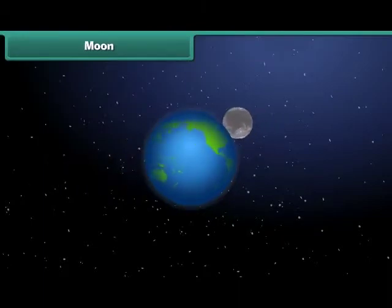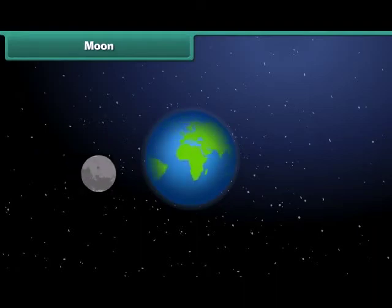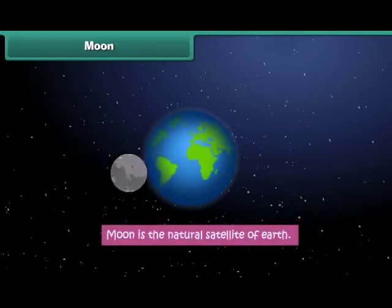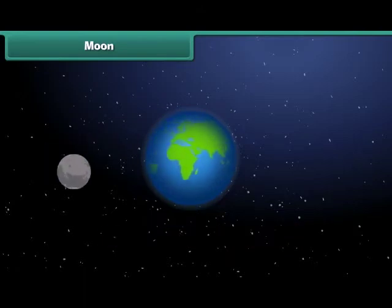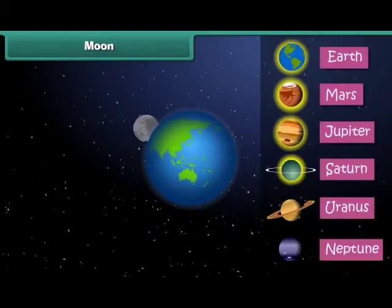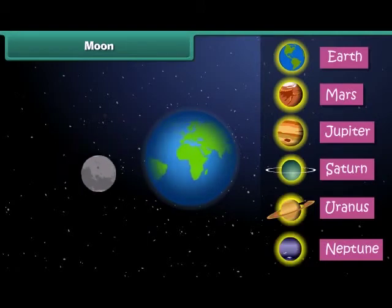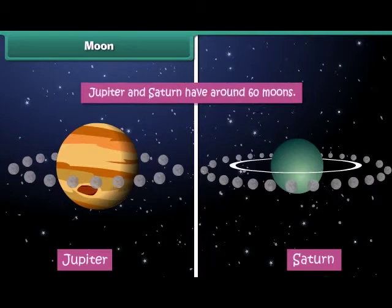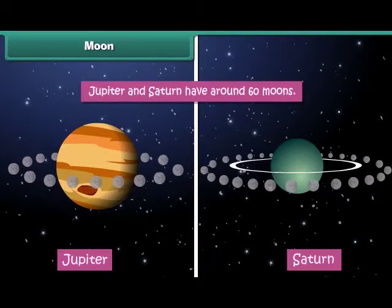A natural satellite is a celestial object that revolves around a planet. It is natural and not man-made. The Moon is the natural satellite of Earth and revolves around it. Apart from Earth, Mars, Jupiter, Saturn, Uranus and Neptune are other planets that have moons. While Earth has only one moon, all other planets have more than one. Jupiter and Saturn have around 60 moons.